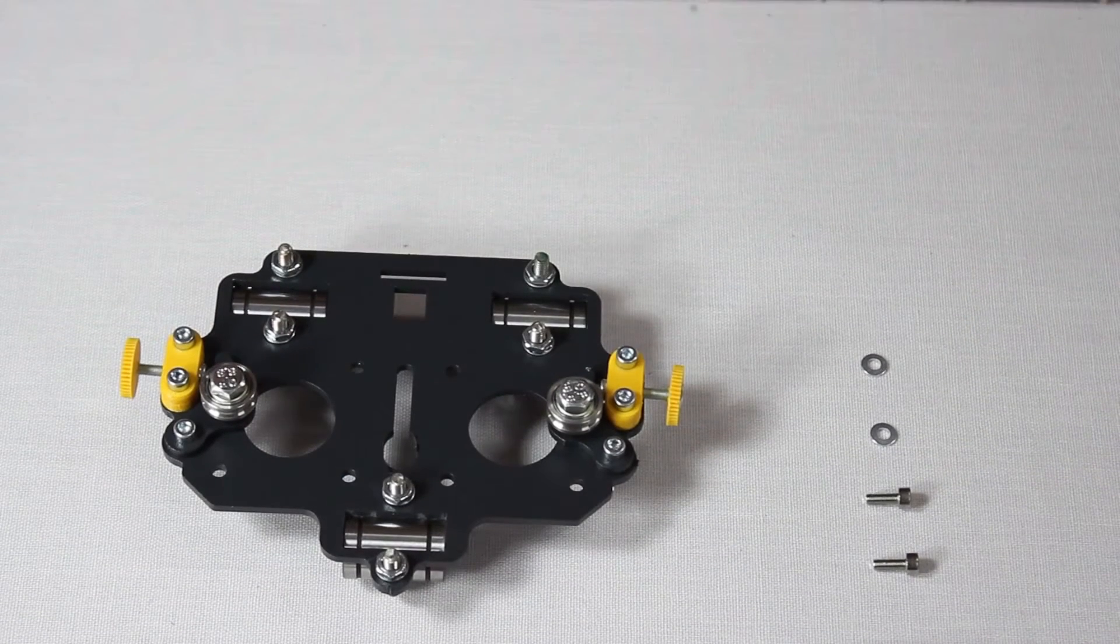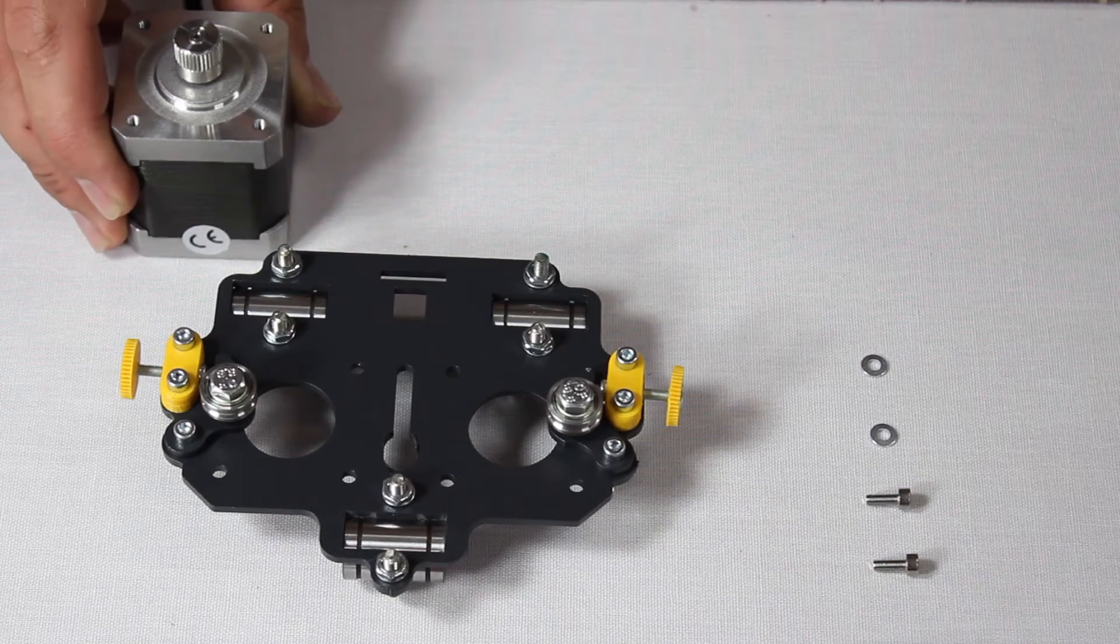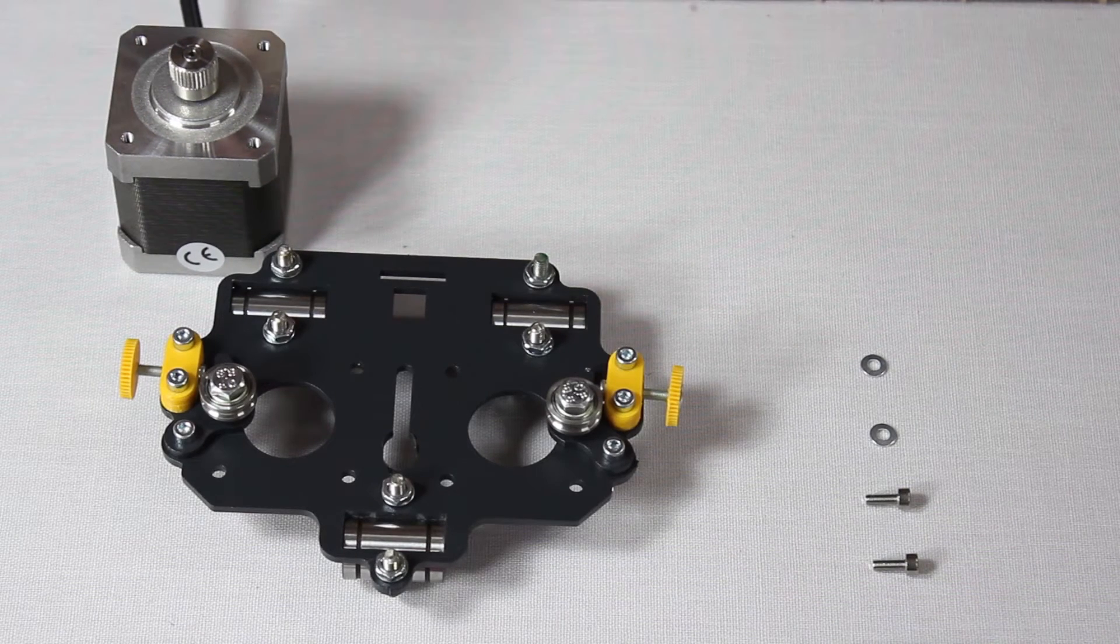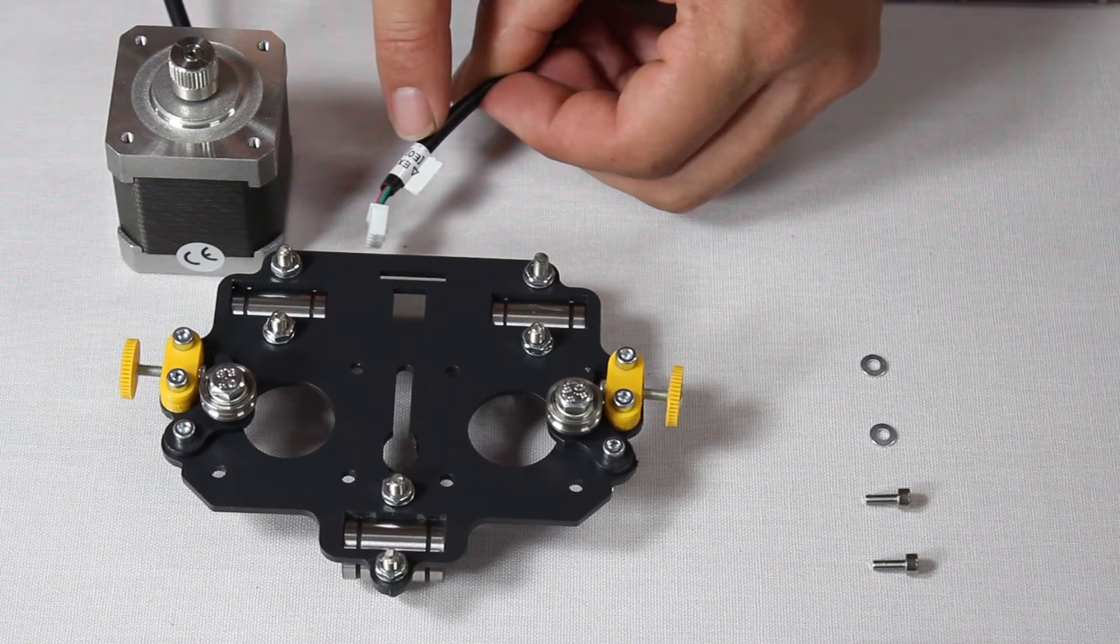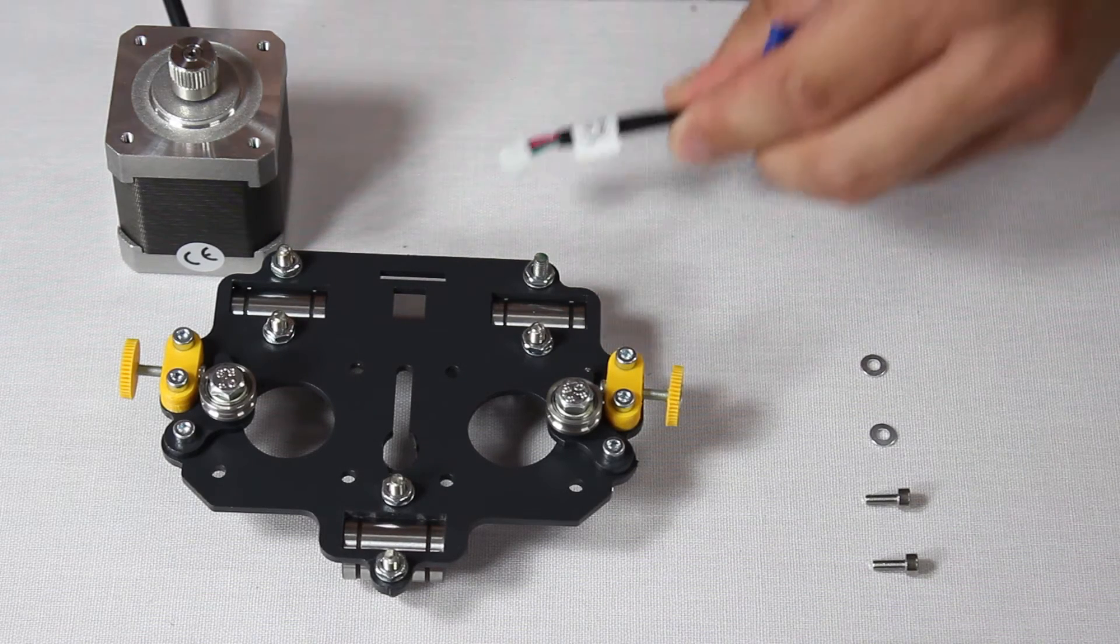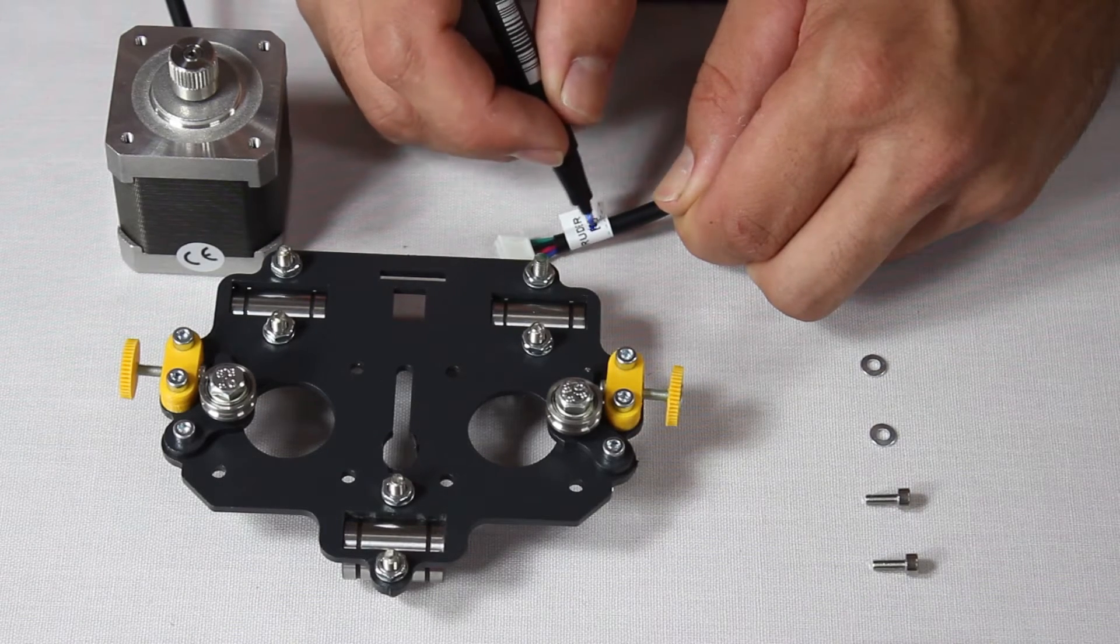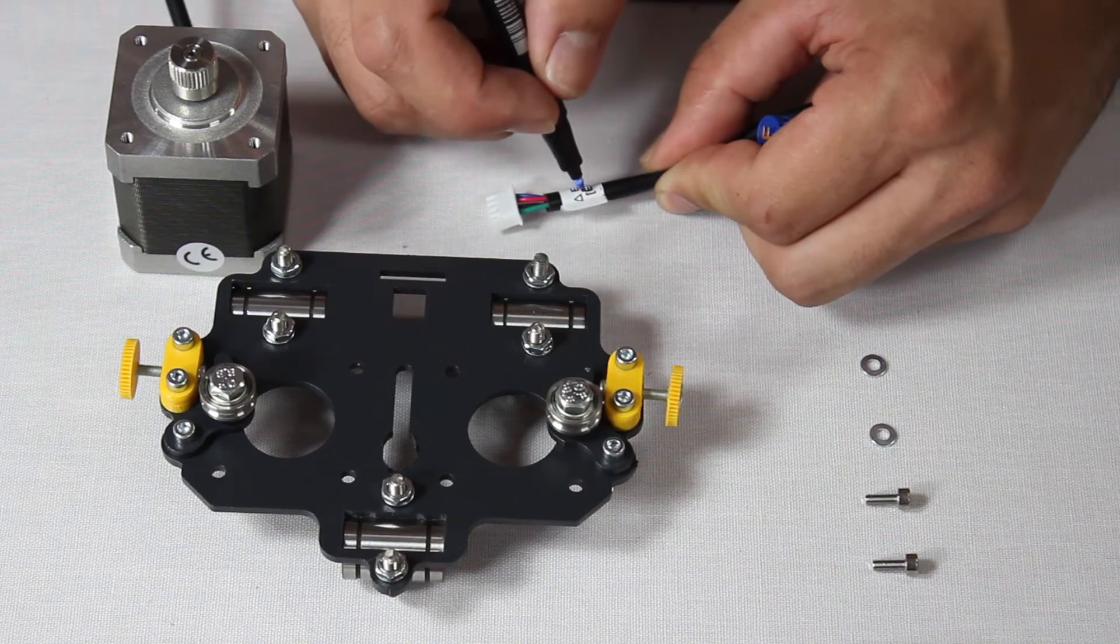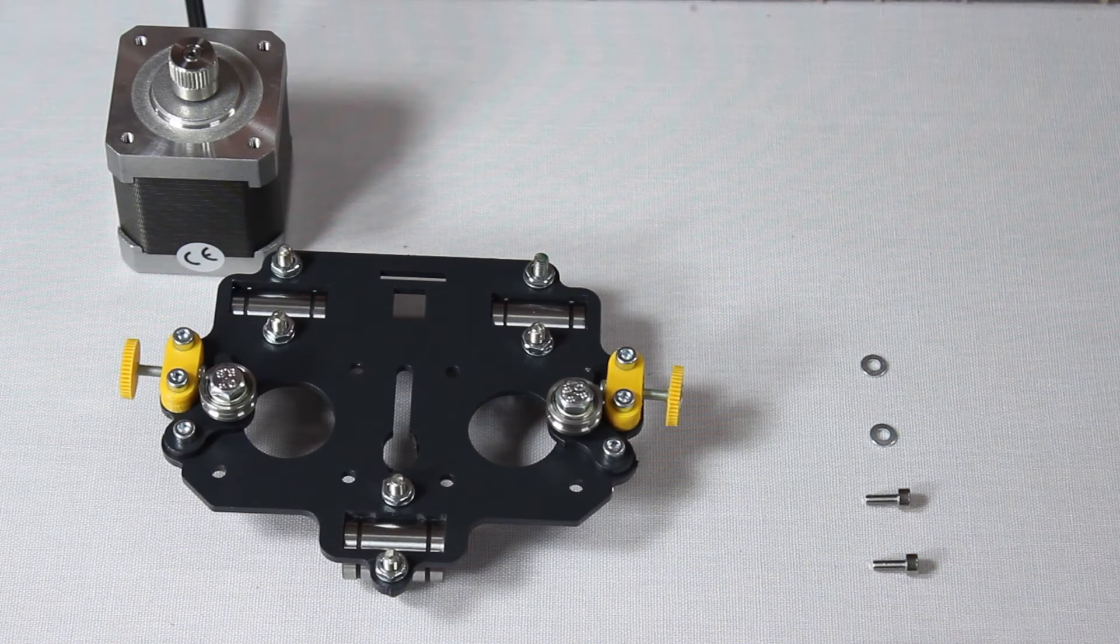The next step is to mount the two stepper motors that will feed the extruders with printing material. On the end of each motor's cable, there is a label. On each label, you, the user, will use the marker to choose which motor is the 0 motor and which is the 1 motor. Use markings that will be unmistakable, as this is crucial for the dual extruder to work properly.